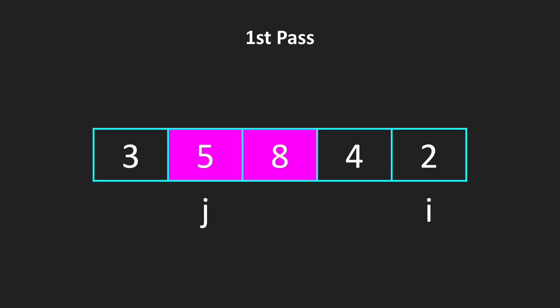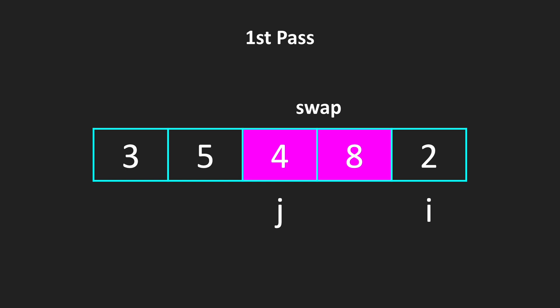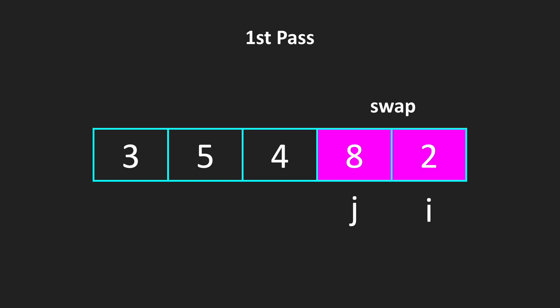And we are moving our j. We are again comparing 5 with 8. 5 is less than 8, so they are in correct order. We are moving our j. So 8 is more than 4. We are swapping these two elements and moving our j. And we are comparing 8 with 2. So 8 is more than 2. We are swapping these two elements also. So we have finalized our first pass.